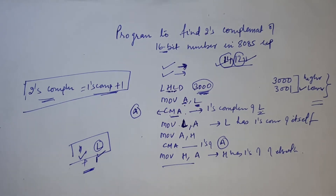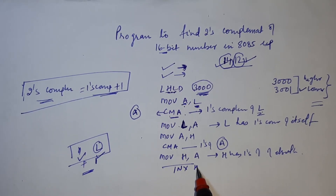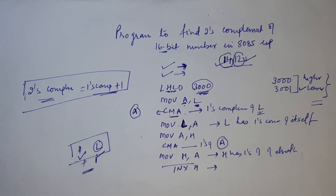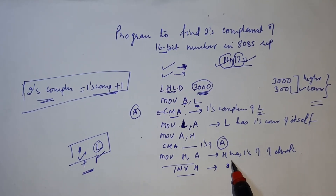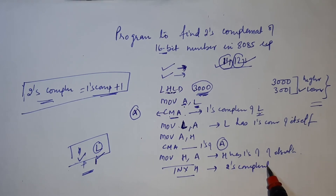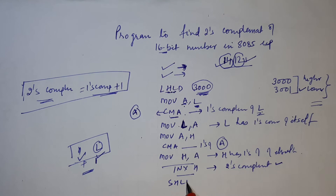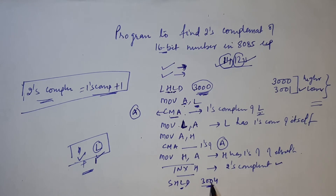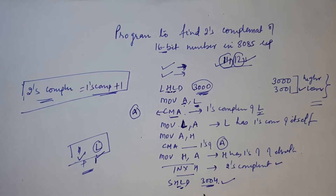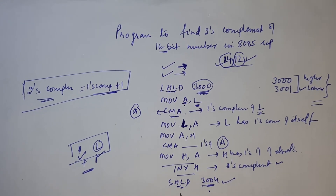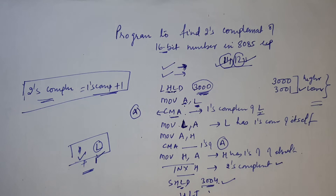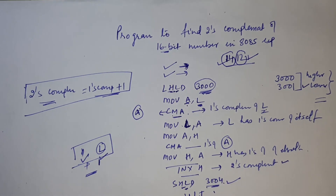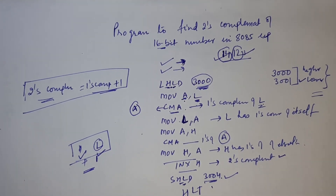To get the 2's complement we just add 1. INX H increments the HL register pair by 1, giving us the 2's complement. Then SHLD stores the result — content of L at memory address 3000H and content of H at the next location. Finally, HLT halts the program.